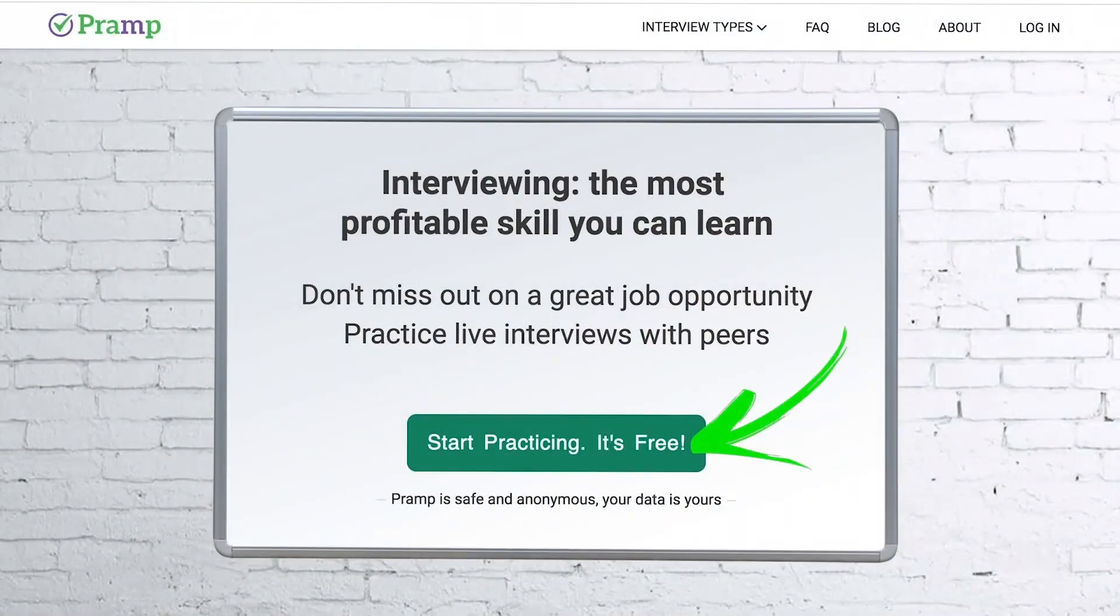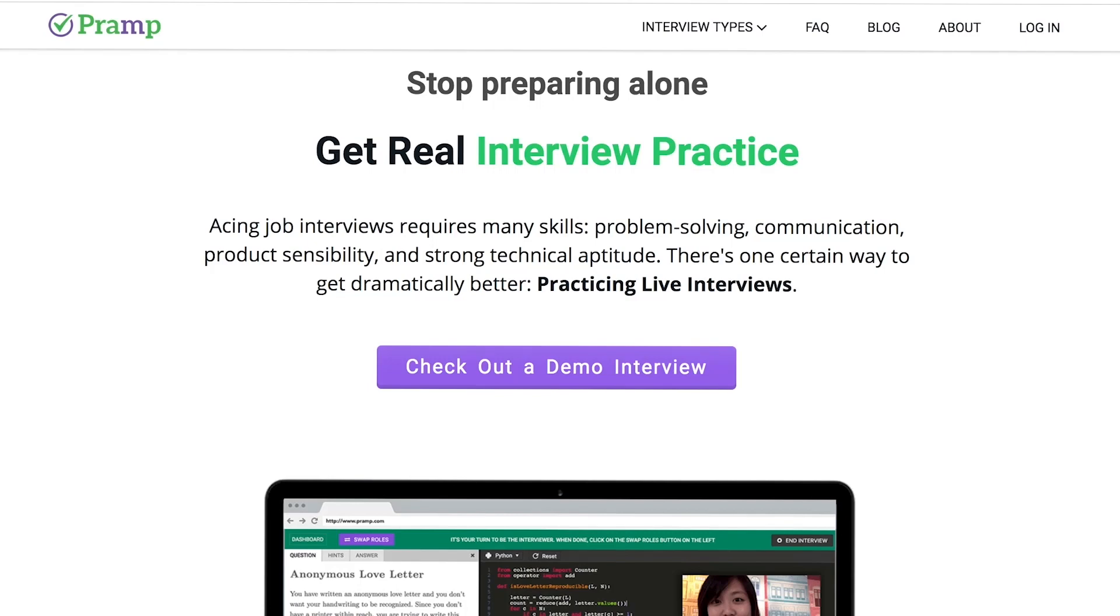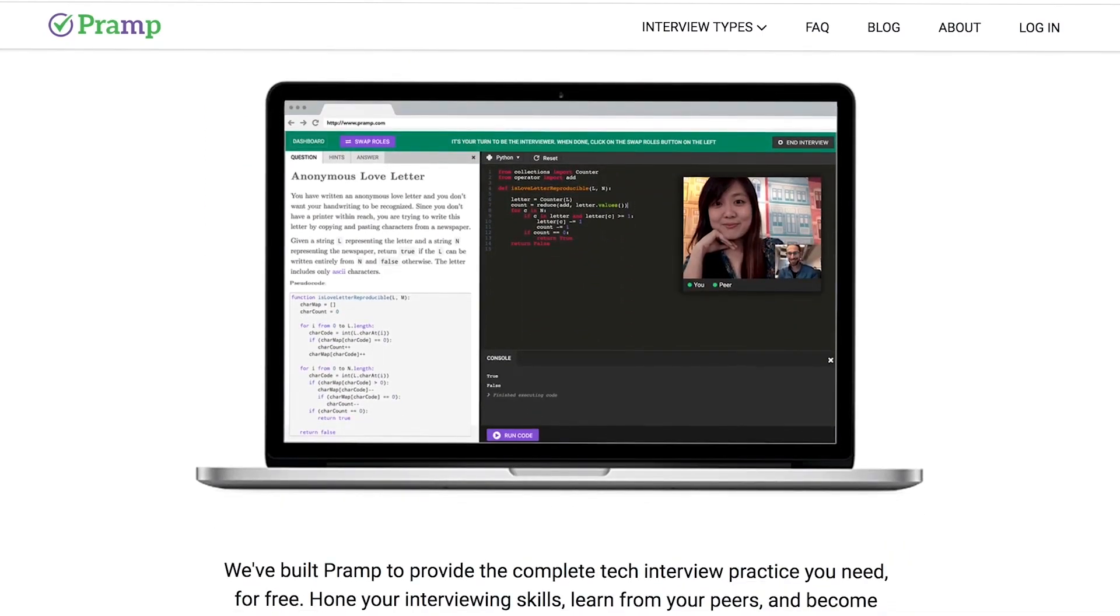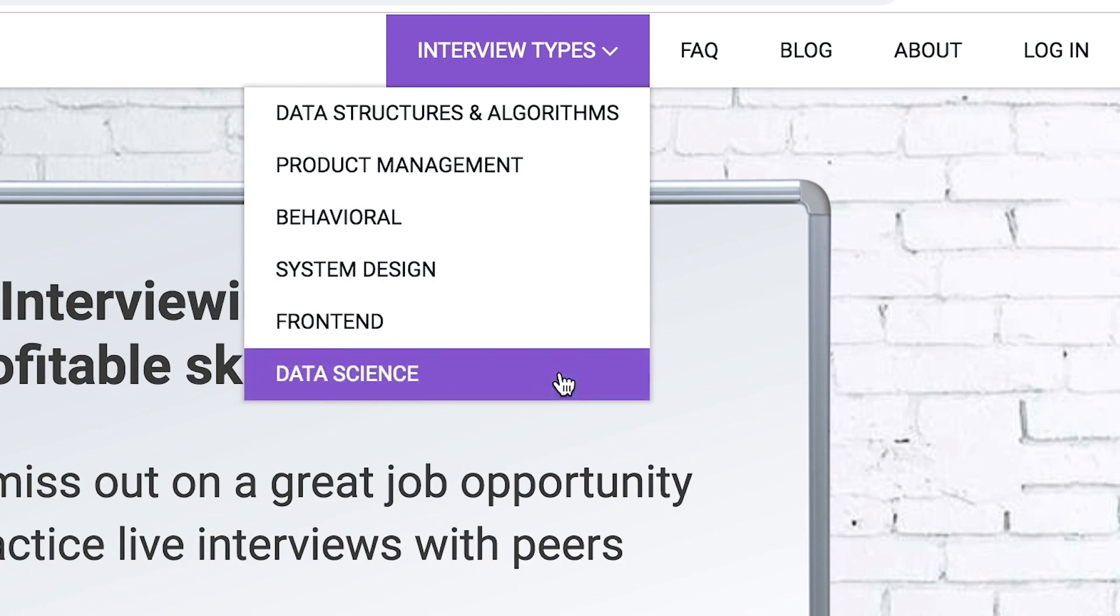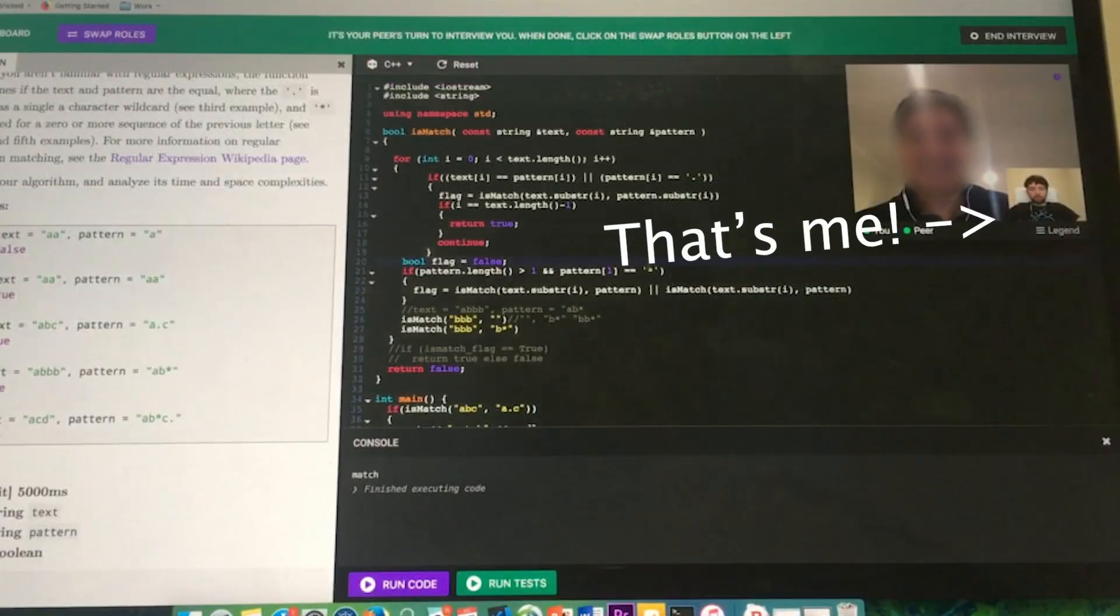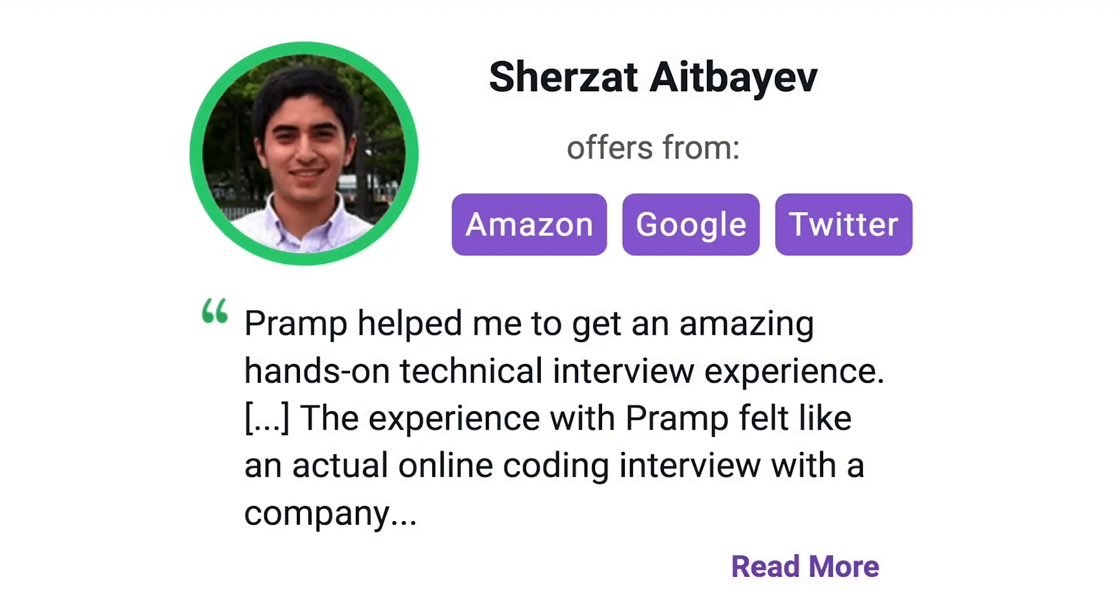Pramp is a free mock interview platform where you can develop your technical interviewing skills. Practice coding with live execution of all major programming languages to solve real interview questions. Interview types include data structures and algorithms, product management, behavioral interviews, system design, front-end, and data science. I've personally used this service to successfully crash course for a software engineering interview. Lots of people are having success getting positions at companies like Amazon, Google, Twitter, and more. Check it out, I'll leave a link for you guys in the description.